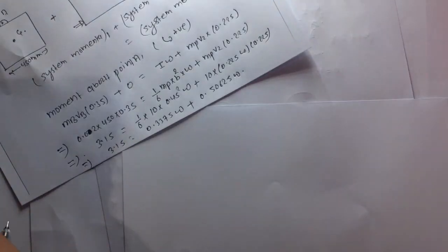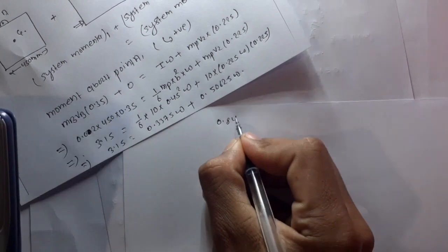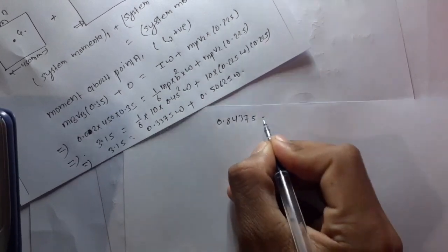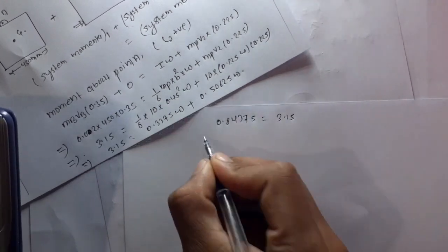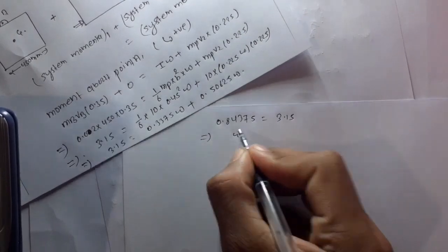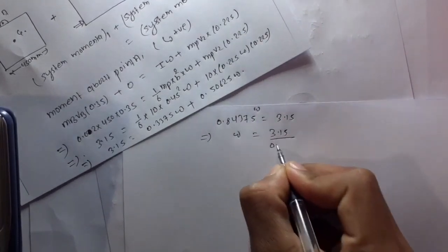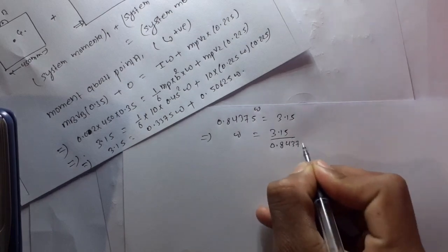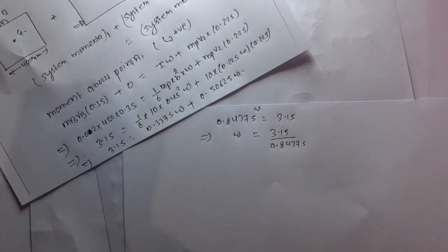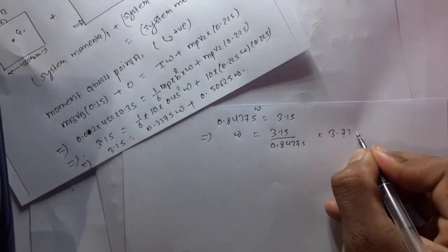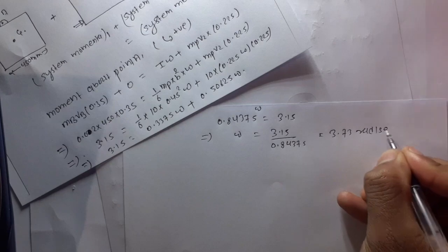So 0.3375 plus 0.50625 equals 0.84375 times omega equals 3.15, so omega is equal to 3.15 divided by 0.84375, which is 3.73 radians per second.